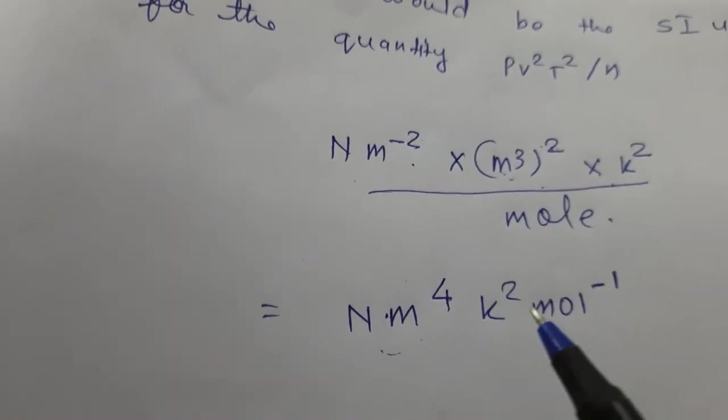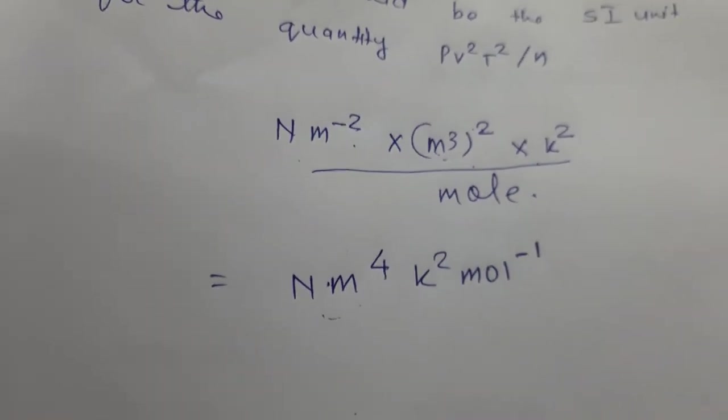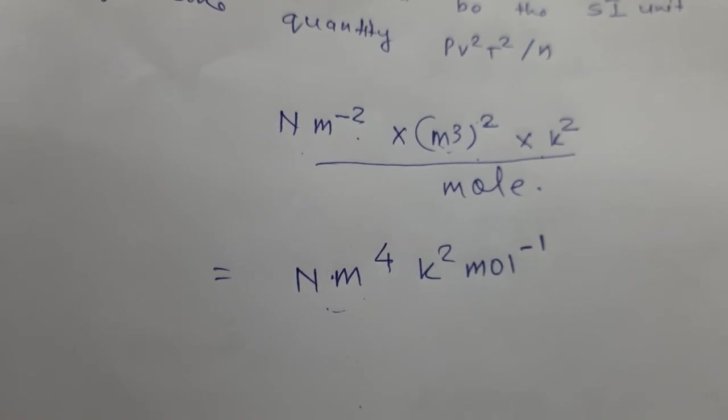So finally, 3 times 2 is 6, meter raised to 6, minus 2 and 4. Newton meter to the power 4, Kelvin square, mole raised to minus 1. Mole inverse. Thank you.